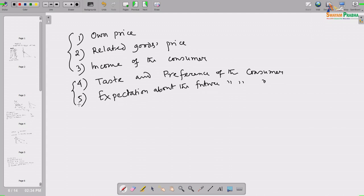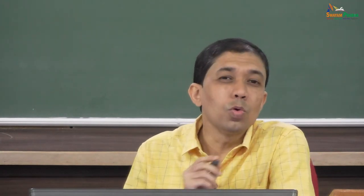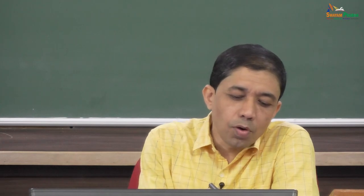Factors 4 and 5 — taste and preference, and expectations about the future — are qualitative in nature and very difficult to quantify. So we will define and classify goods in terms of the first three factors, which are easily quantifiable.